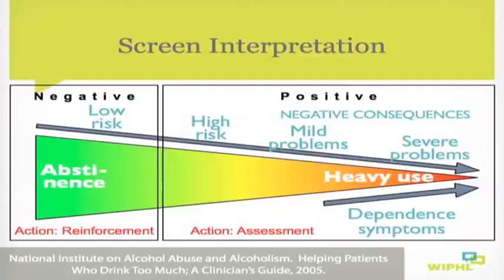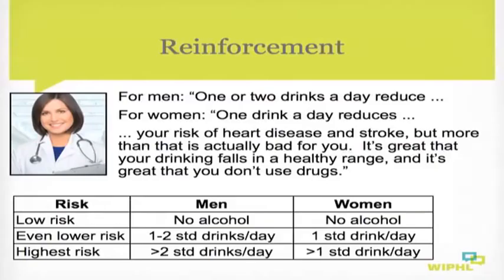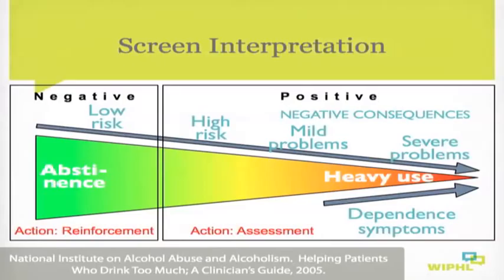If the screen is negative, we want to reinforce good, healthy, low-risk drinking behaviors — for example, letting patients know that one or two drinks a day for a man or one drink a day for a woman reduces the risk of heart disease and stroke, but more than that is actually unhealthy. A positive screen suggests that a patient may have risk or problems — high-risk drinking or drug use, negative consequences, or dependence. Once a patient screens positive, it's important to conduct further assessment to determine where on the continuum they lie.